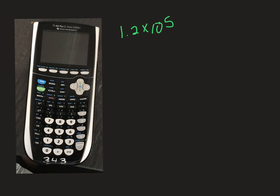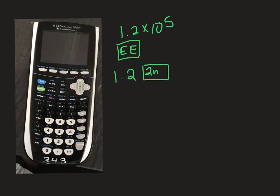Here's what I want you to do instead. Find the EE button — it's right above the 7, it's a second function button. I want you to use the EE button. So what you're going to do is hit 1.2 on your calculator — and there's no times, no times — then hit the second function button because it's in blue, then hit the EE button. What that does is tells your calculator this is a scientific notation number, keep the whole thing together. Then you just put in the 5. So: 1.2, second, EE, 5.